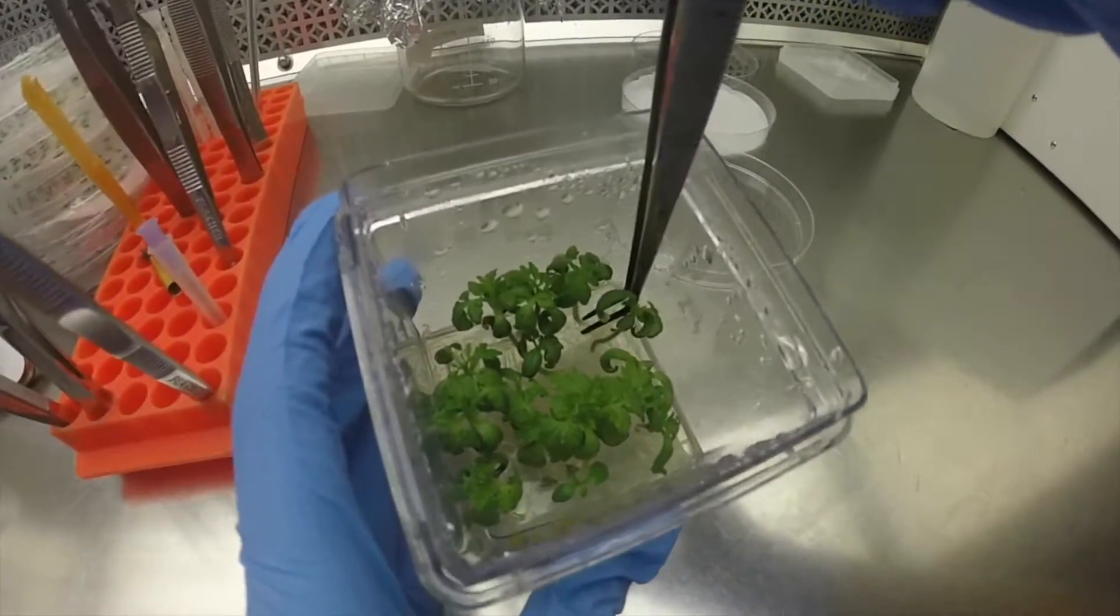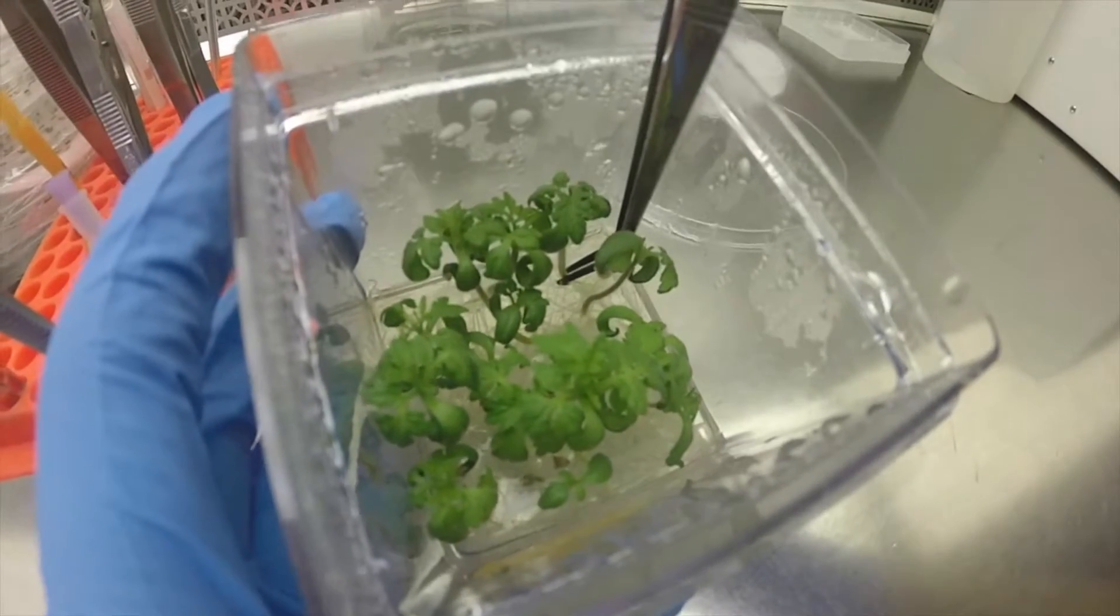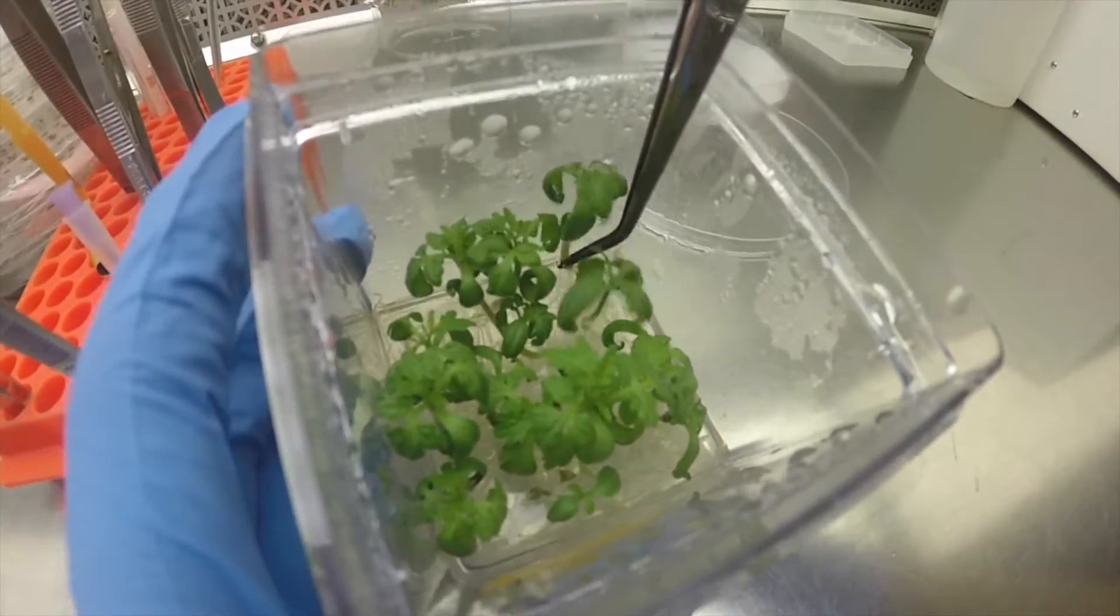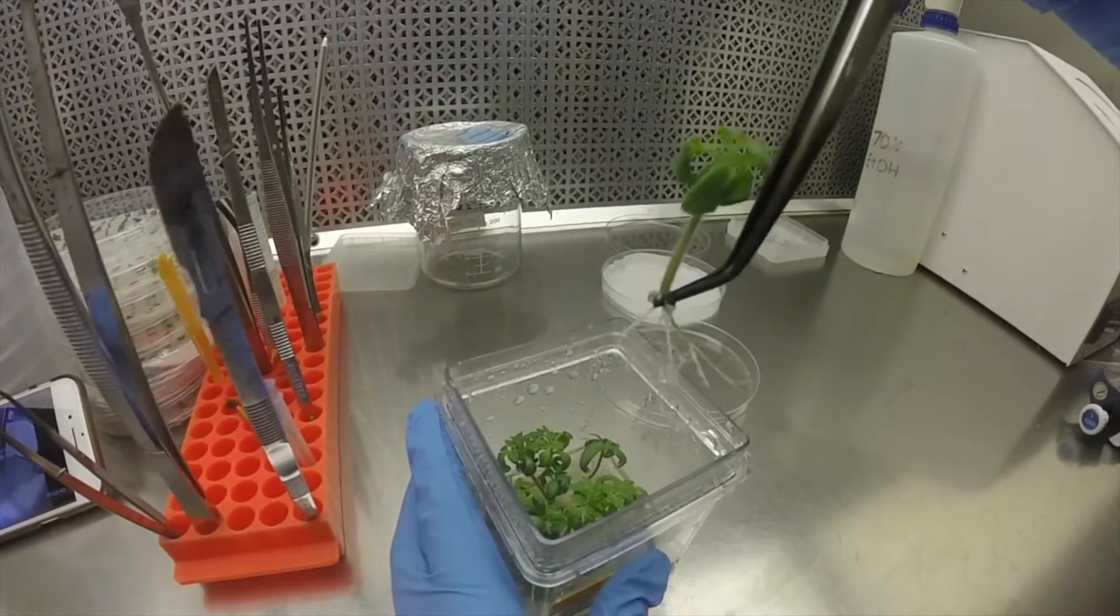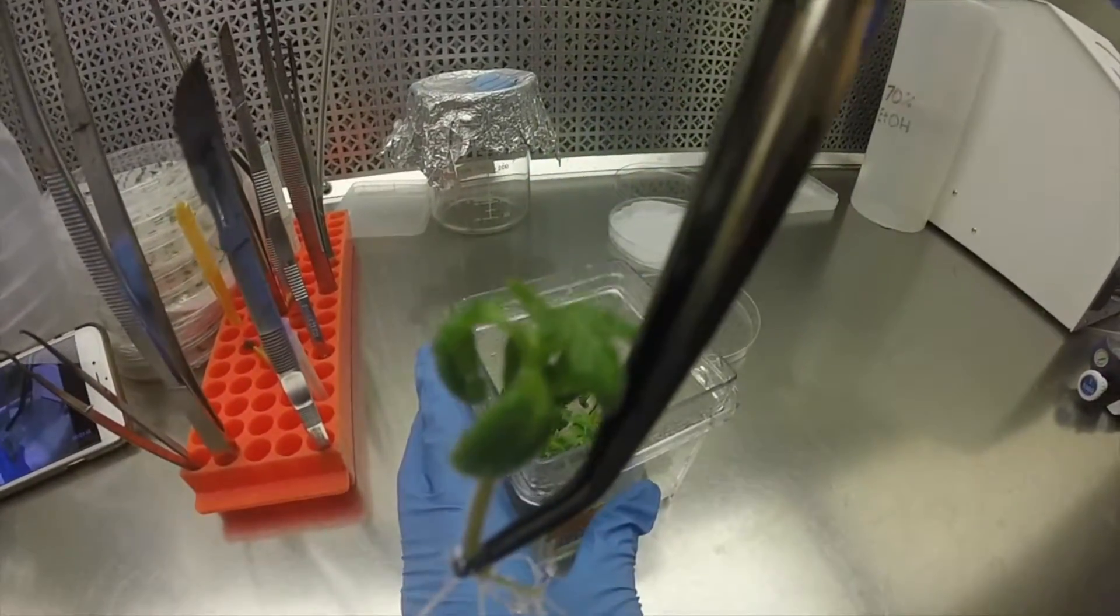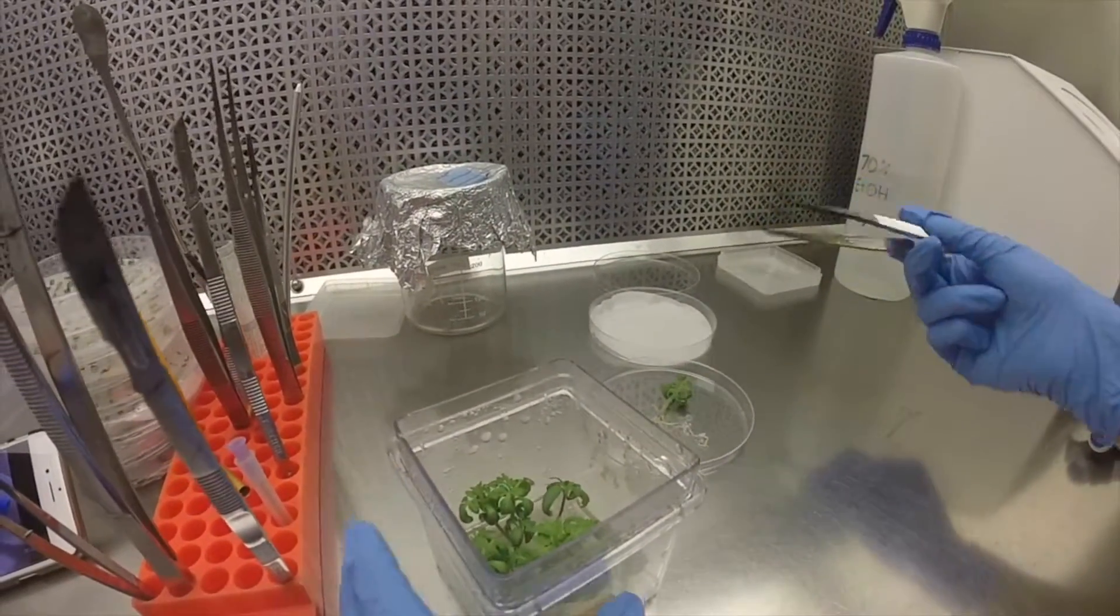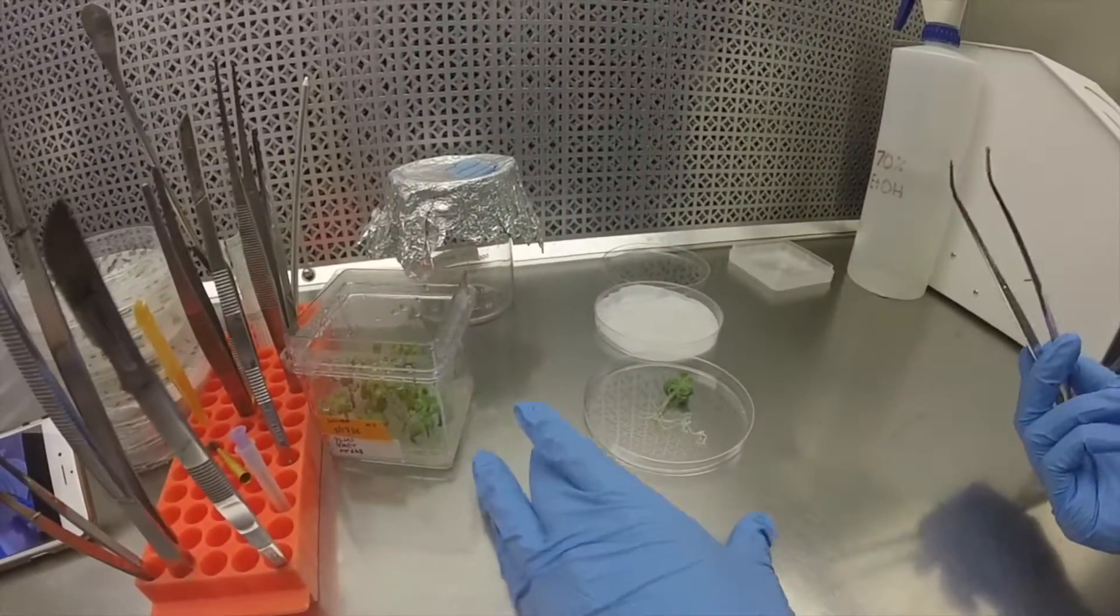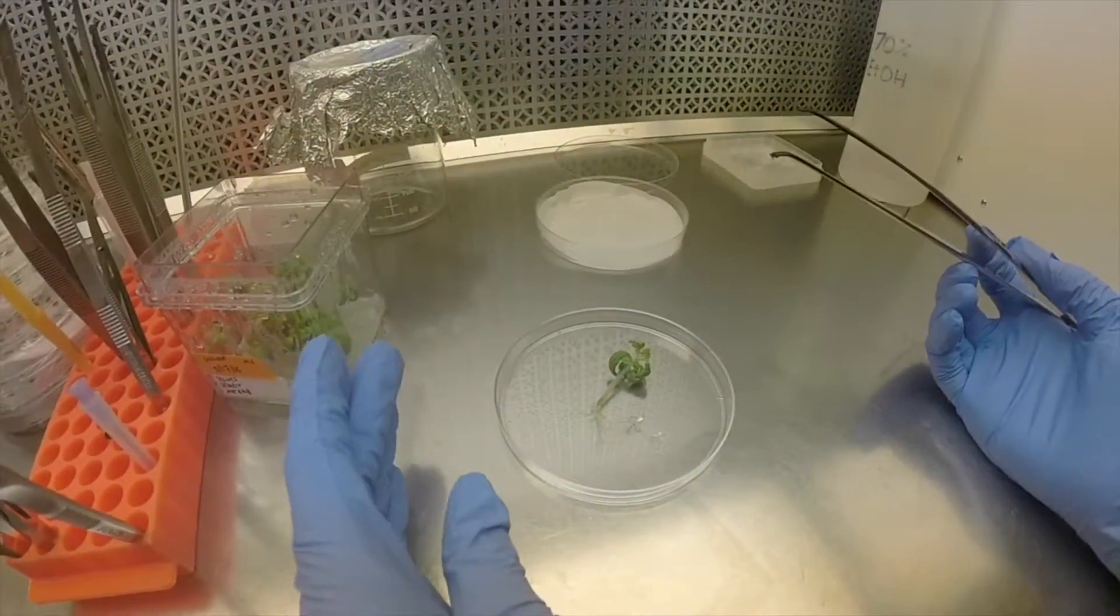We're going to start by grabbing the plant at the base of the stem, right where it meets the media, and we're going to squeeze and pull it out. Usually you'll get a few roots with your little plant. We're going to place it on our sterile petri dish. This is a different sterile lid that we'll be using to cut on.